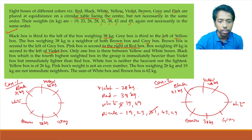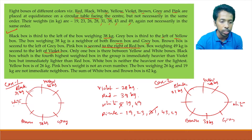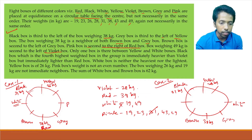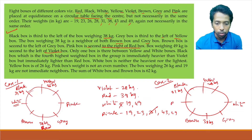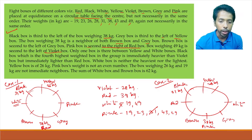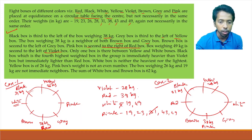Pink box is second to the right of red box — only one possibility: pink here and red here with one gap, since the other position is already occupied by white. So red is here and pink is here. Now, the sum of white and brown box weights is 62. If white is 19 then brown is 43, which is present; if white is 49 then brown is 13, which is not present. Also white cannot be 19 because white is neither heaviest nor lightest — so we reconsider.